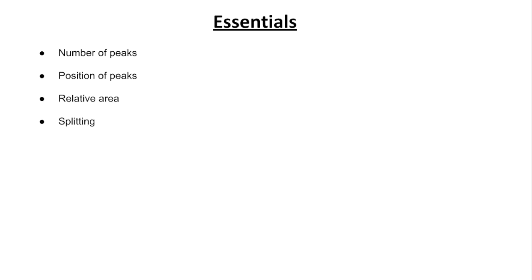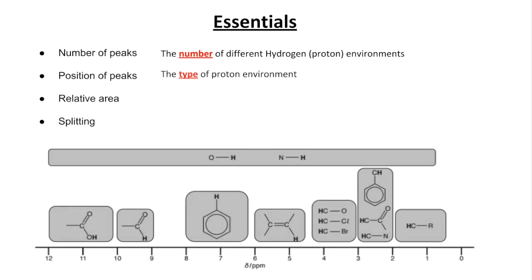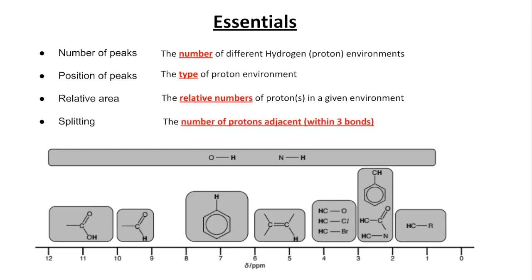So four things. The number of peaks tells us the number of different hydrogen or proton environments in the molecule. The position of peaks tells us the type of proton environment — there's a snip of the proton NMR data sheet. The relative area tells us the relative numbers of protons in a given environment, also referred to as the integration value. And finally, the splitting tells us the number of protons that are adjacent to, or within three bonds of, the proton causing the signal.